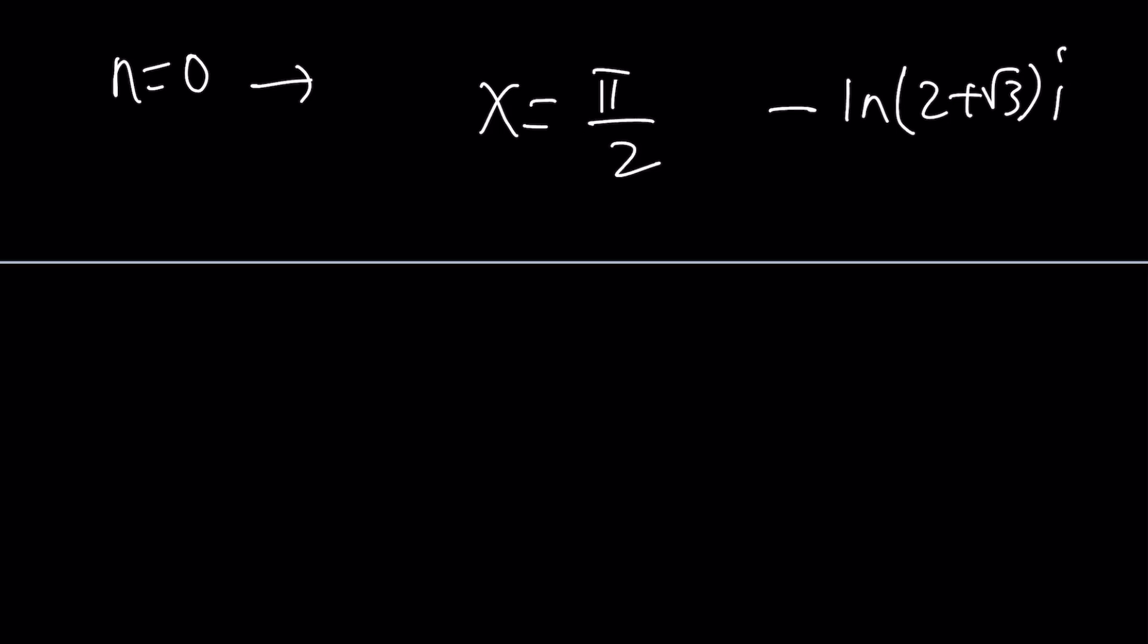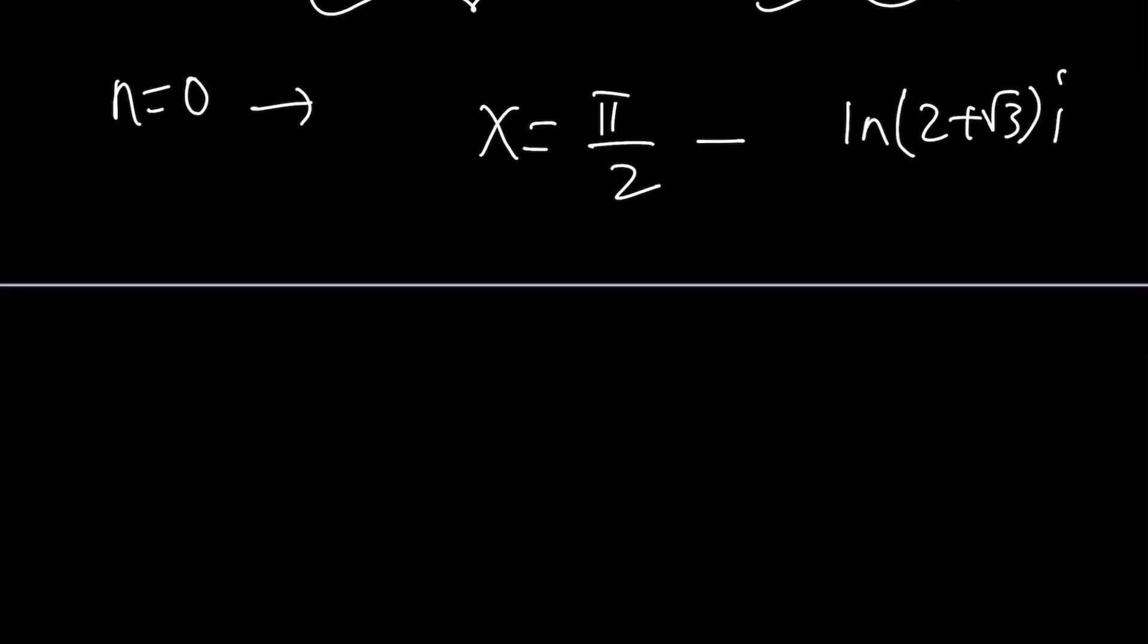So that's going to be pi over 2 minus that. Minus this. And let's bring this closer. Like this. And that's going to be it.